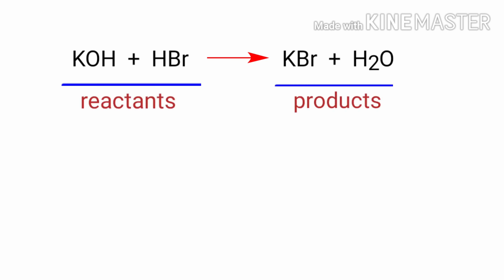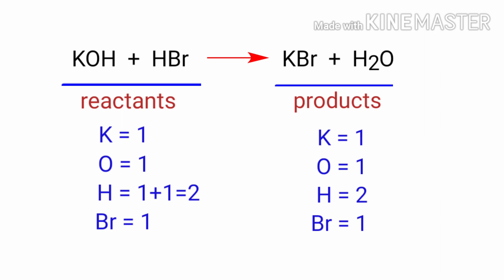In this equation the reactants are potassium hydroxide and hydrogen bromide and the products are potassium bromide and water. If you look at this equation, the number of atoms at the reactants side are same as the number of atoms at the products side. There are one potassium atom, one oxygen atom, two hydrogen atoms and one bromine atom on both sides. So we don't need to balance this equation because this equation is already balanced.